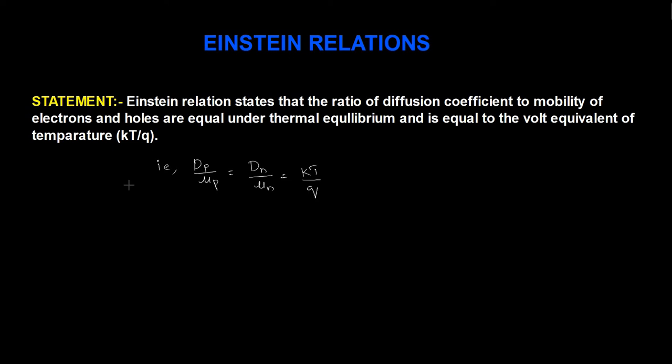Hi all, we will discuss the Einstein relations. Einstein relations states that the ratio of diffusion coefficient to mobility of electrons and holes are equal under thermal equilibrium, and is equal to the volt equivalent of temperature, that is kT by Q.